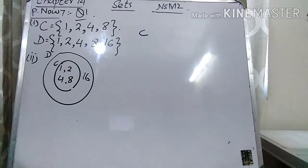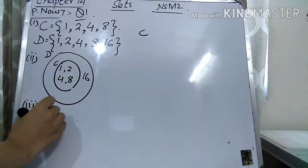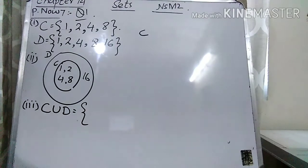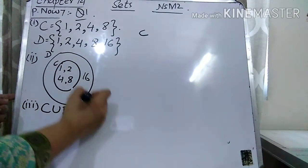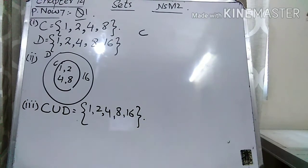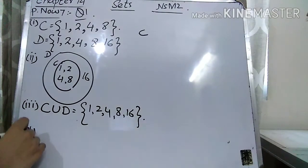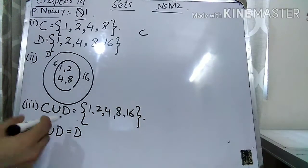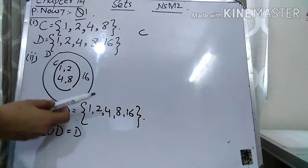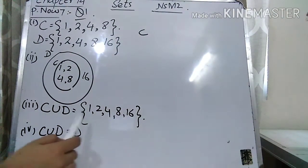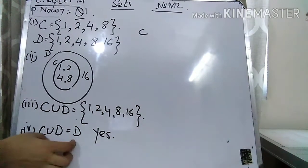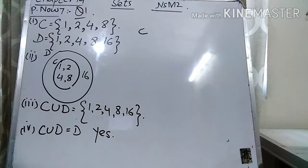Part 3: from the Venn diagram find C union D. Whenever the word union is used it means combined together — you write all the elements together. So C union D = {1, 2, 4, 8, 16}. Part 4: is C union D equal to D? C union D is {1, 2, 4, 8, 16} and D is {1, 2, 4, 8, 16}. The elements are the same, so yes, C union D is equal to D. I hope question number one is clear to you.